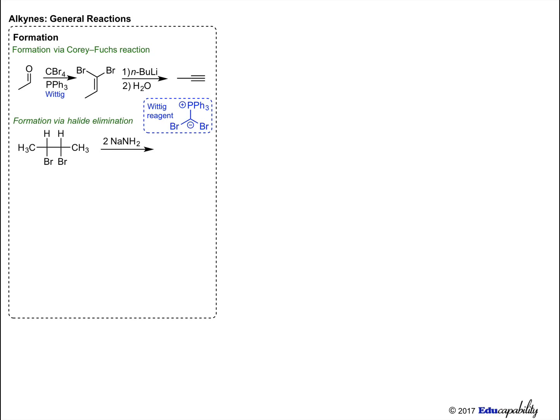Dihalides, which may be formed by halogenation of alkenes, can be treated with two equivalents of the strong base sodium amide to form internal alkynes. This process can also be used to form terminal alkynes; however, three equivalents of the strong base are required.